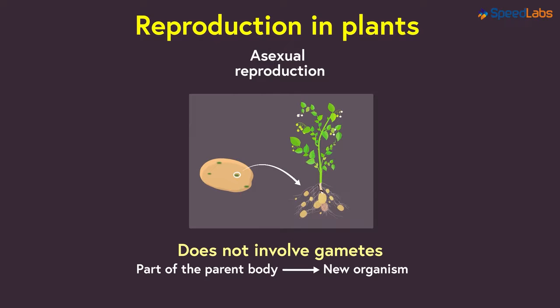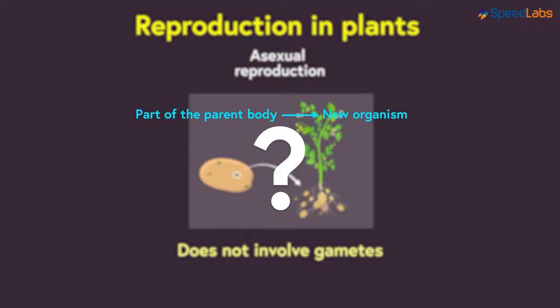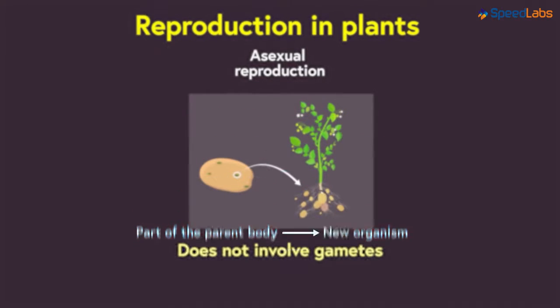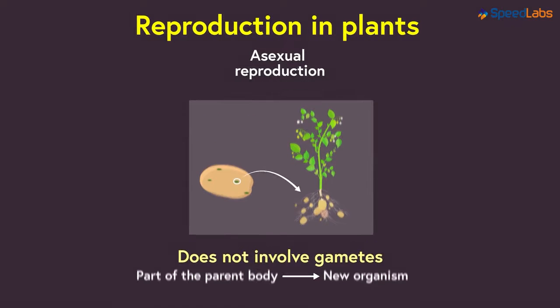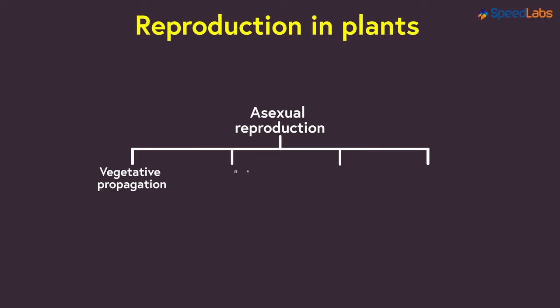Interesting! But which part of the parent body will grow into a new organism? Based on various factors, asexual reproduction is further categorized into subtypes. A few of these include vegetative propagation, fragmentation, budding, and spore formation. Let's get introduced to each type in detail in the upcoming videos.